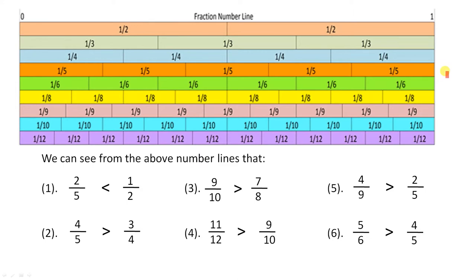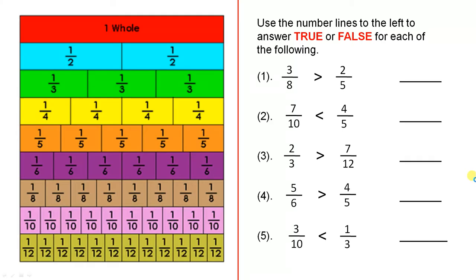So here we've seen how to use this number line, which is divided into different parts, to compare fractions. Now use the number lines to the left to answer true or false for each of the following. Is it true or false that 3 eighths is greater than 2 fifths? Let's see where 3 eighths is — there's 3 eighths here. This is 2 fifths. You can just see that 3 eighths is actually less than 2 fifths, so this is false — we write F for false.